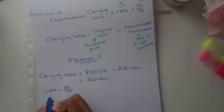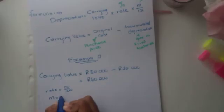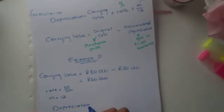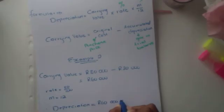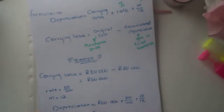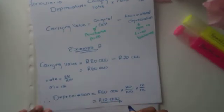The rate is 20 percent, written as 20/100. The number of months is 12, since the asset was not purchased or sold during the year, so we safely assume a full 12 months. Plugging into the formula: Depreciation = 60,000 × (20/100) × (12/12) = 12,000 rands.